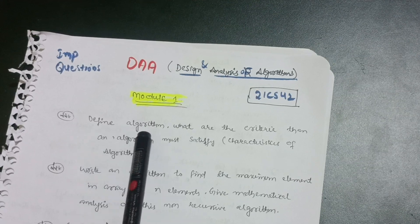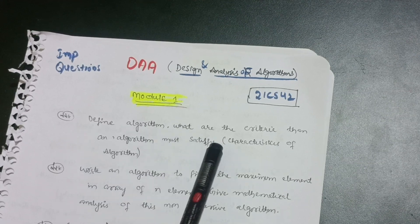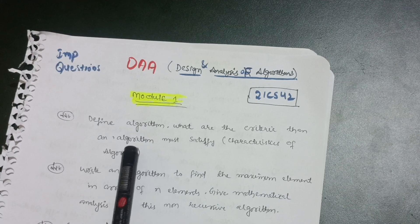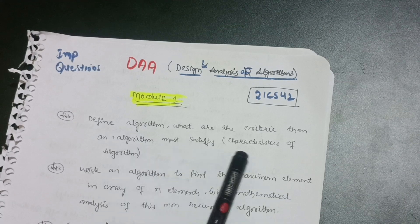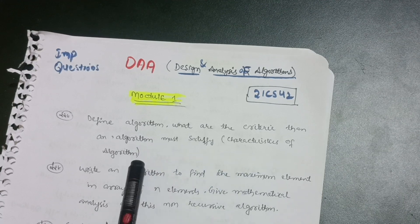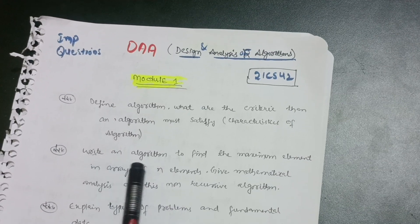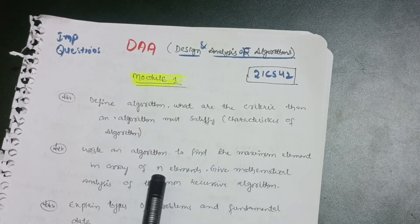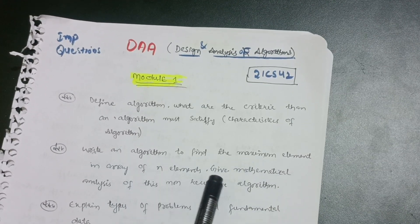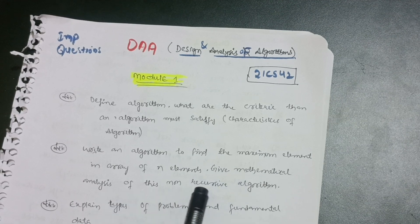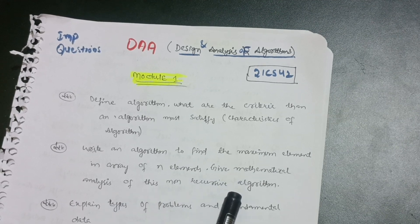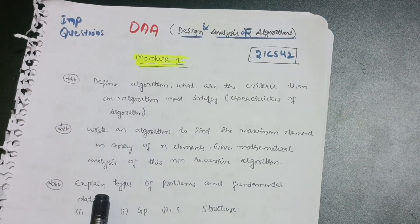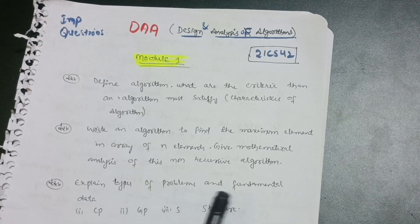First question: define algorithm, what are the criteria and characteristics of algorithms. Second: write an algorithm to find the maximum element in an array of n elements and give mathematical analysis of this non-recursive algorithm. Third question: explain types of problems and fundamental data structures like CP, GP, and S.